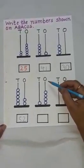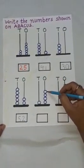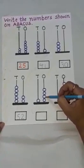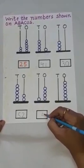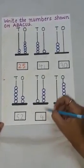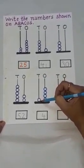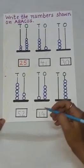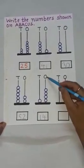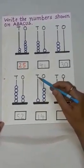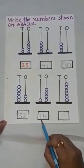Now, come to the next abacus. Count the number of beads at the ones place: 1, 2, 3, 4. How many beads are there? 4. So, we are going to write here 4. Now, beads at the tens place — there is only one bead. So, we will write here 1. The number is 1 tens, 4 ones. Number is 14.